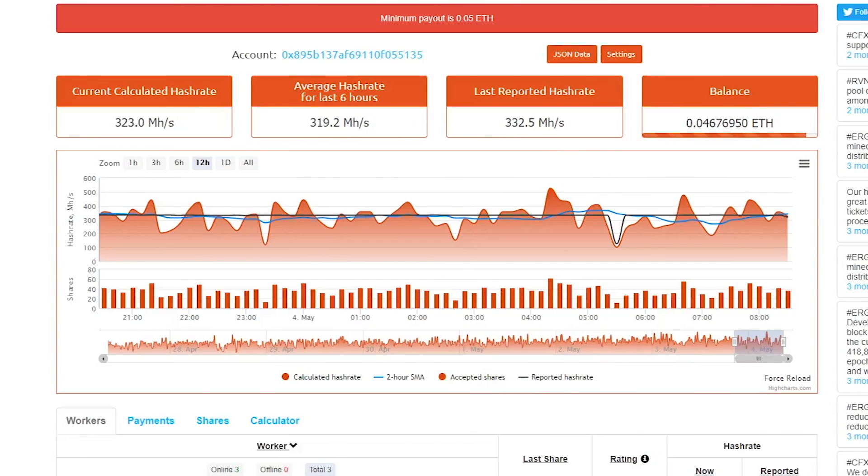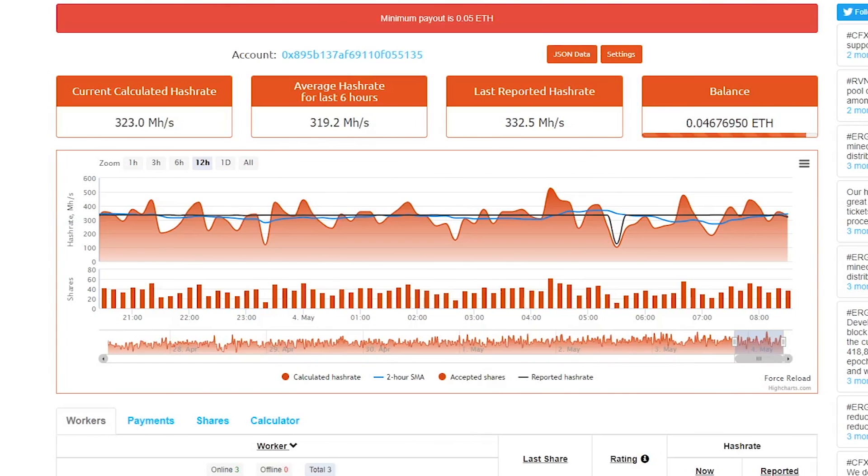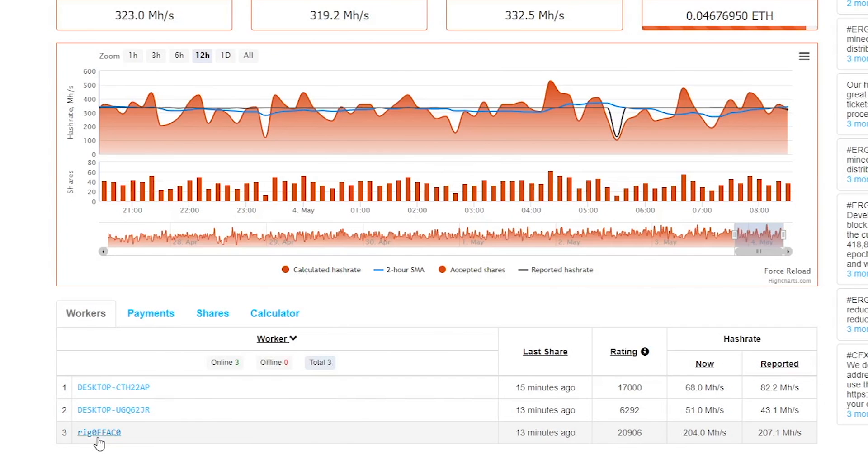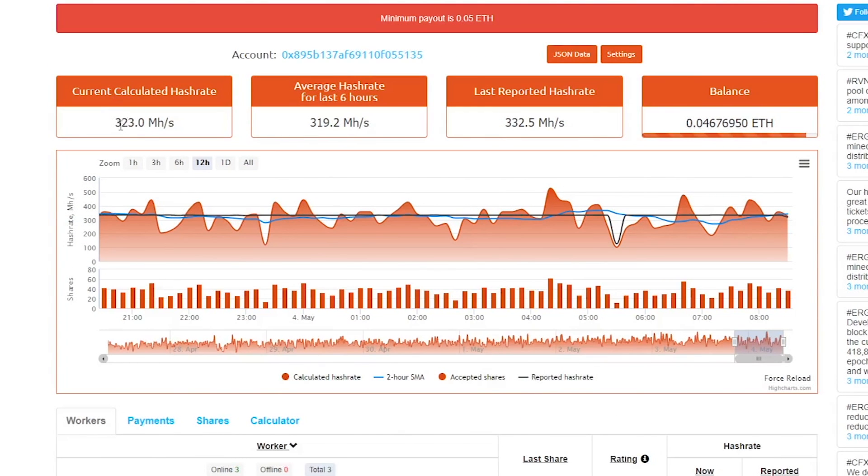Alright, continuing this video, I'm going to be using an actual example of a mining rig that I have hooked up to a mining pool. So I actually have my two computers here and then a mining rig that I've built, and it's submitting shares to NanoPool. So this first box right here, 323, this is the current calculated hash rate. So as you can see down here, these are all the shares that I have been submitting to this pool.